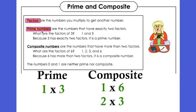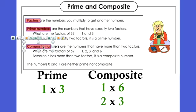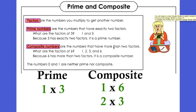Then we have what's called composite numbers. Most numbers that you are going to come across are composite numbers. Composite numbers are numbers that have more than two factors. For example, the number 6 — you can have 1 and 6, just like a prime number, but you can also get 6 by 2 times 3. Because 6 has more than two factors, it's called composite.